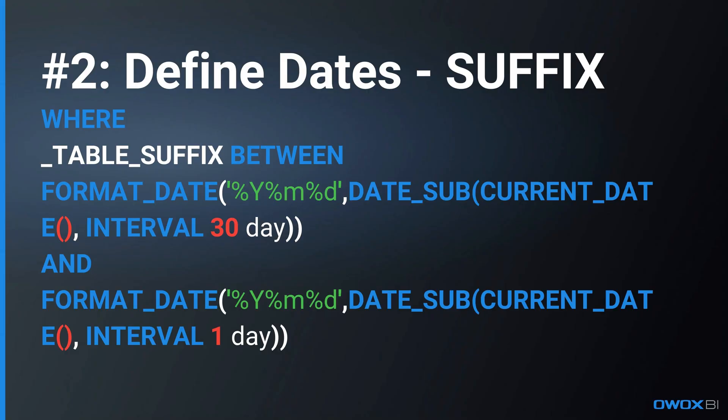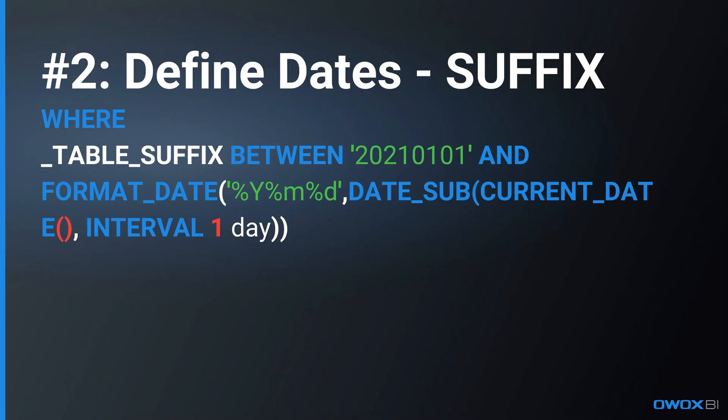But what if you want to write a query to analyze a dynamic date range — let's say the last 30 days? In this case, we need to select a rolling last 30 days period: today minus 30 days until yesterday. You can see the line on your screen right now. So you can use static dates, dynamic days for a rolling period — for example, plus seven or 30 days or any number you wish — or you can combine static and dynamic dates. For example, you can grab the data for January 1st 2021 up until yesterday.